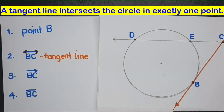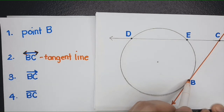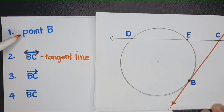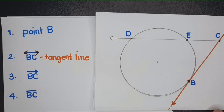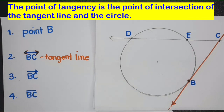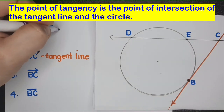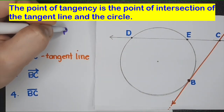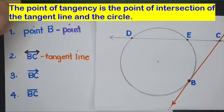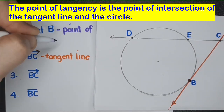What do you call this point? It's point B — the point of tangency. This is the point of intersection of the tangent line and the circle. Let me write the name of point B. That is the point of tangency.